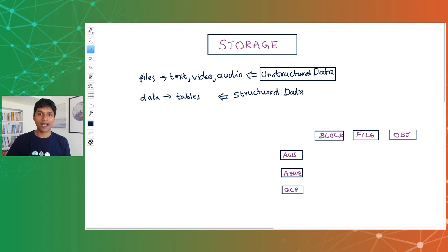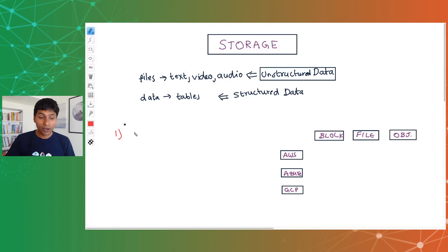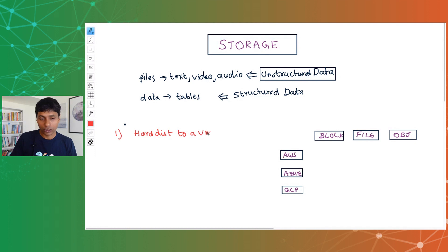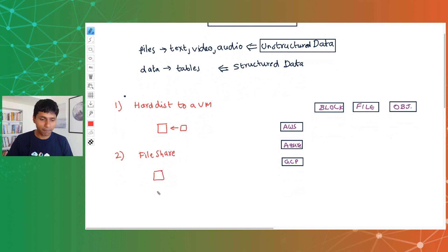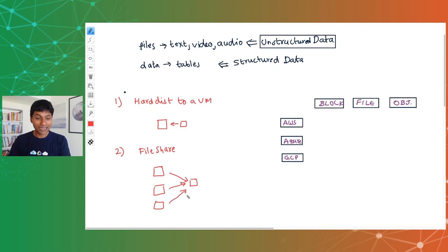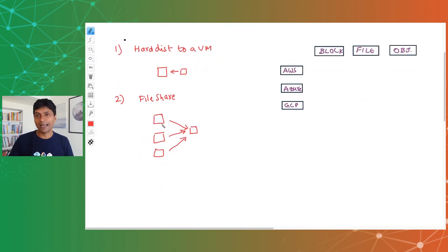Let's look at a few use cases related to unstructured data. The first use case is attaching a hard disk to a virtual machine — so I have a virtual machine and I'd want to attach a hard disk to it. The second use case is a file share use case. I might have multiple virtual machines, and I would want to create a file share and share it between them, so that some files can be accessed from multiple virtual machines — whether inside a data center or in the cloud.